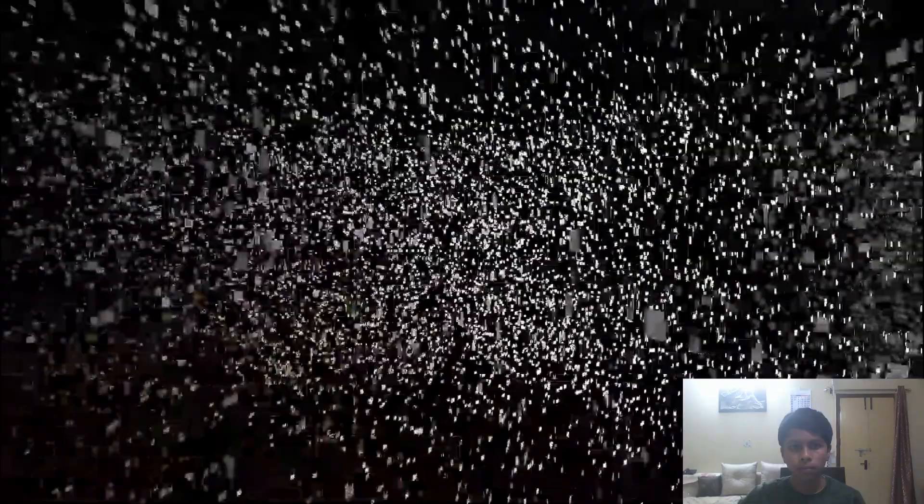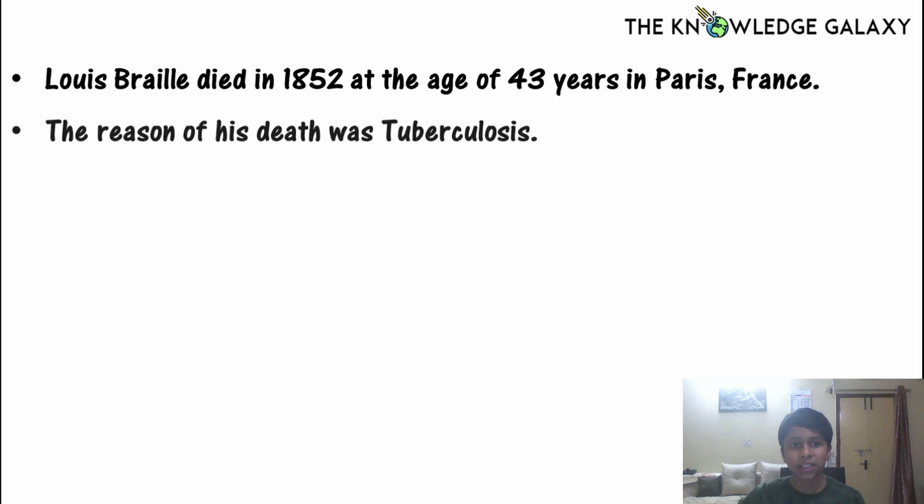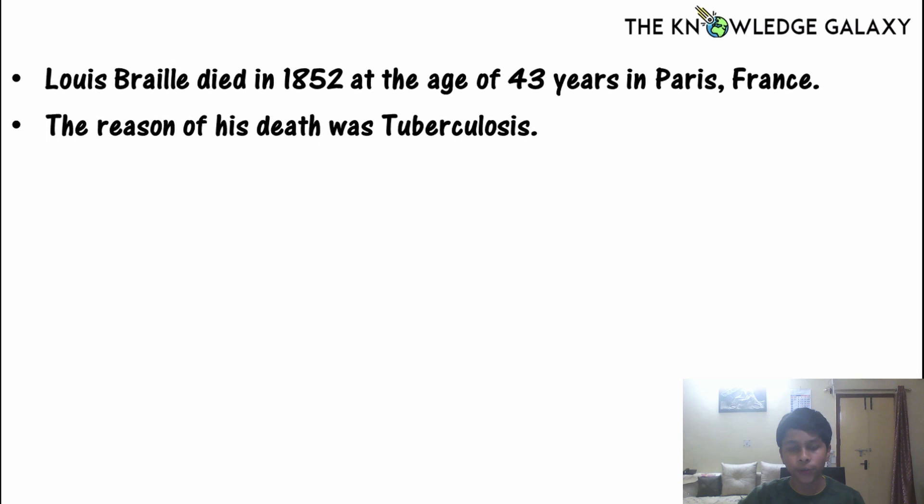Louis Braille died in 1852 at the age of 43 years in Paris, France. The reason for his death was a disease known as tuberculosis.